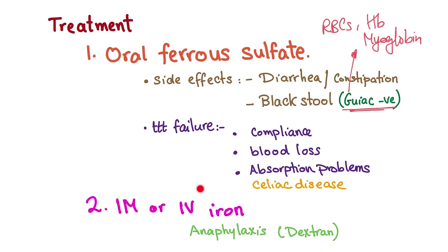If oral iron fails, the next step is intramuscular or intravenous iron. The biggest side effect of IV iron is anaphylaxis, especially if it contains dextran. That covers iron deficiency anemia.